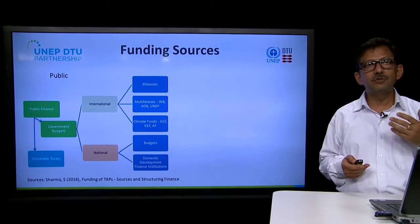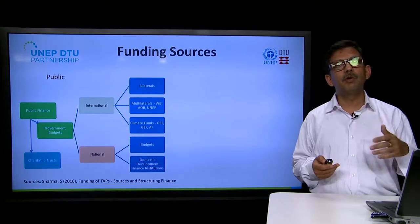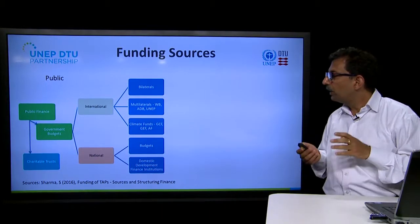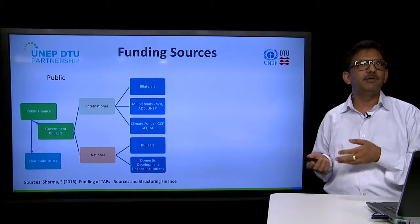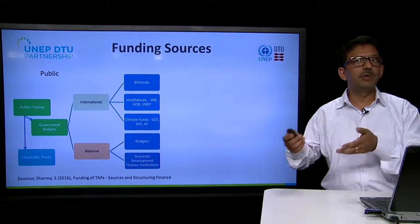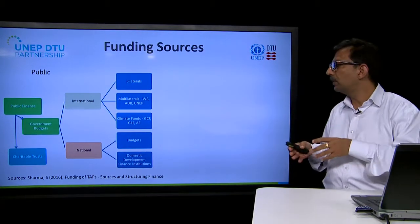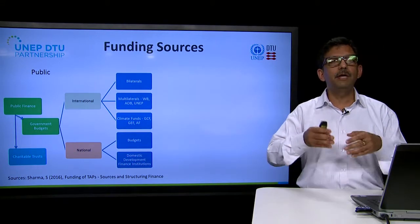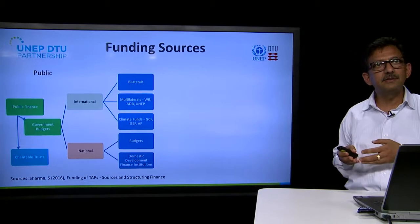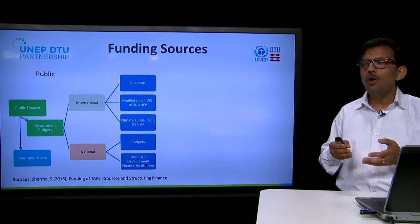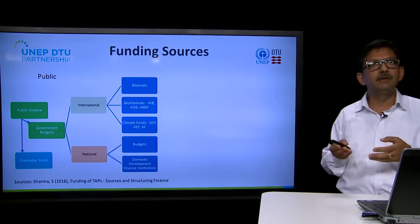Coming to funding sources — once we have identified the budget for each action, we need to look at who is going to fund these actions. Funding could come from the public and private side. In terms of public funding, we generally talk of funding provided by government budgets, charitable trusts, institutions, and emerging foundations. Government budgets used within a country represent national funding, while government budgets used outside a country represent international assistance — which could be bilateral assistance, or multilaterals such as the World Bank, Asian Development Bank, or climate funds like the Green Climate Fund and GEF.